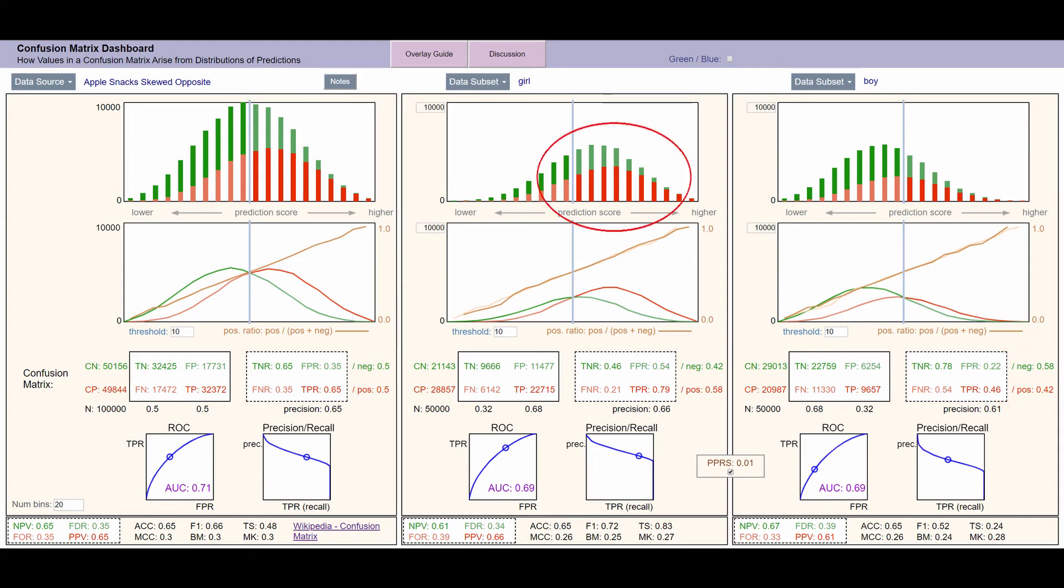If one subpopulation has characteristics that inherently place them with higher prediction scores, then they are going to see not only higher true positive rates, but also higher false positive rates. That's simply because they've got more positive predictions overall.